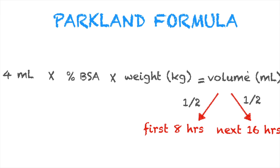That's the first part. The second part involves identifying how much IV fluid we'll give in the first 8 hours and the next 16 hours. The total volume is divided in half — the first half runs in the first 8 hours, and the second half runs in the next 16 hours. We will understand this clearly once we apply it to actual problems.